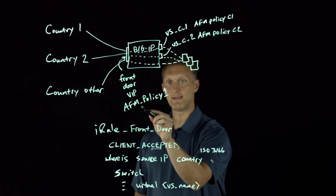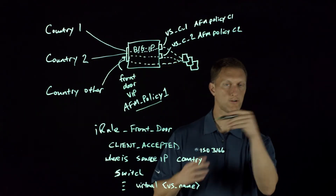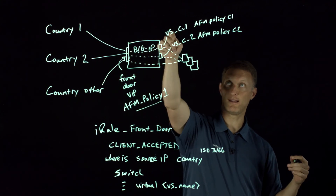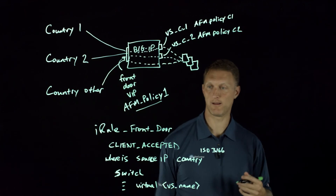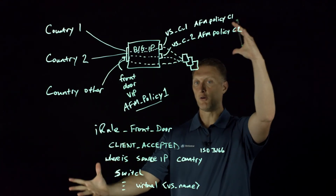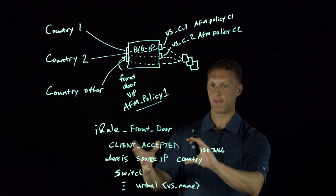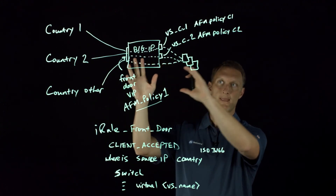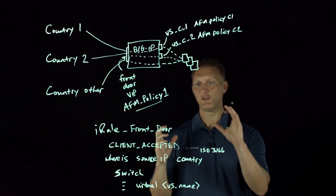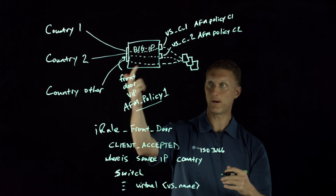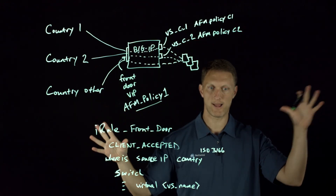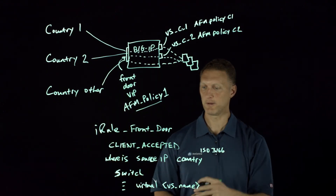So not only are they going to go through the basics of the AFM policy connected to the front door virtual server — those generic firewall policy rules that everyone goes through — they're also going to hit the stuff specific to country one's source IP address that you want to configure. Once they pass that, they can get into the backend web application. You can do some of this geolocation stuff directly on the AFM policy itself, but if you have different teams managing the AFM policy for each country and you want each team to be able to work independently, then this solution works well for that.